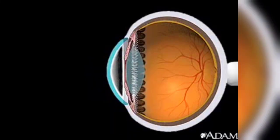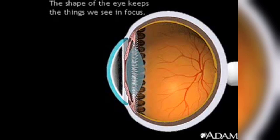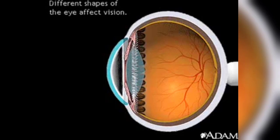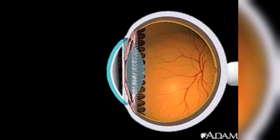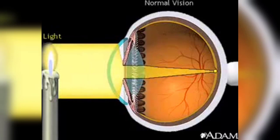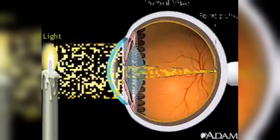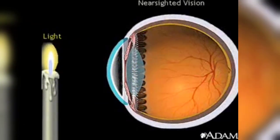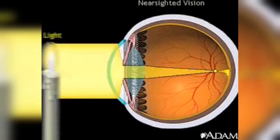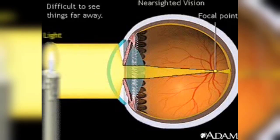Next, let's take a look at a couple of common conditions that cause blurry vision. The shape of the eye is very important in keeping things we see in focus. If the shape of the eye changes, it affects a person's vision. Normally, light is precisely focused onto the retina at a location called the focal point. Because a nearsighted eye is longer from front to back than a normal eye, light is focused in front of the retina instead of directly onto it. This makes it difficult to see things that are far away. A person with a long eye is referred to as nearsighted.